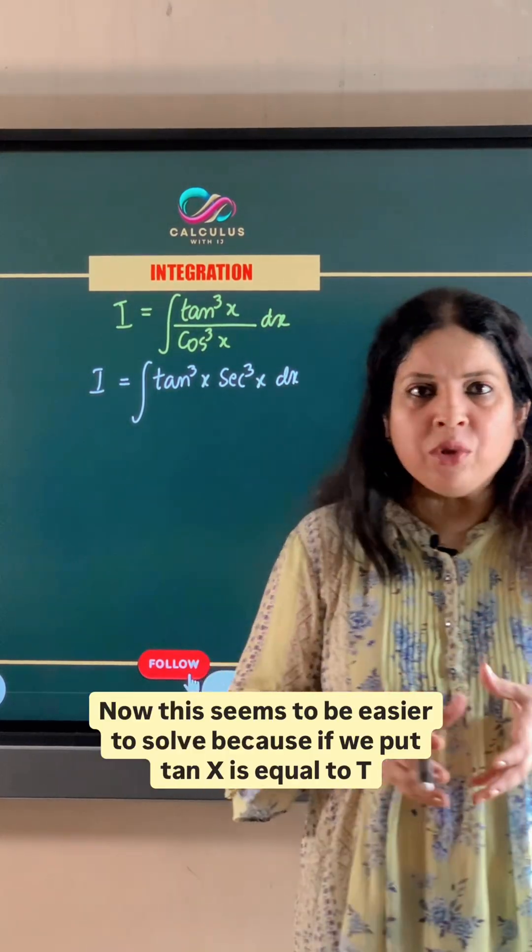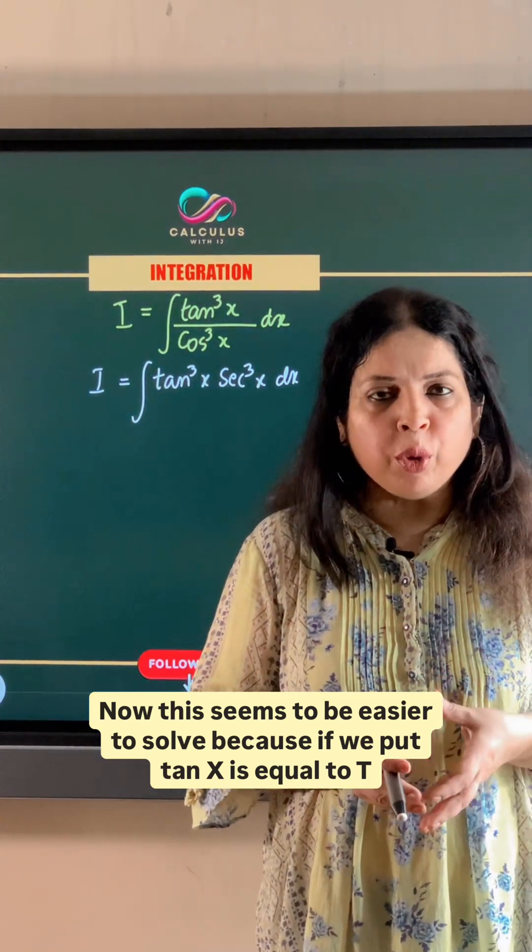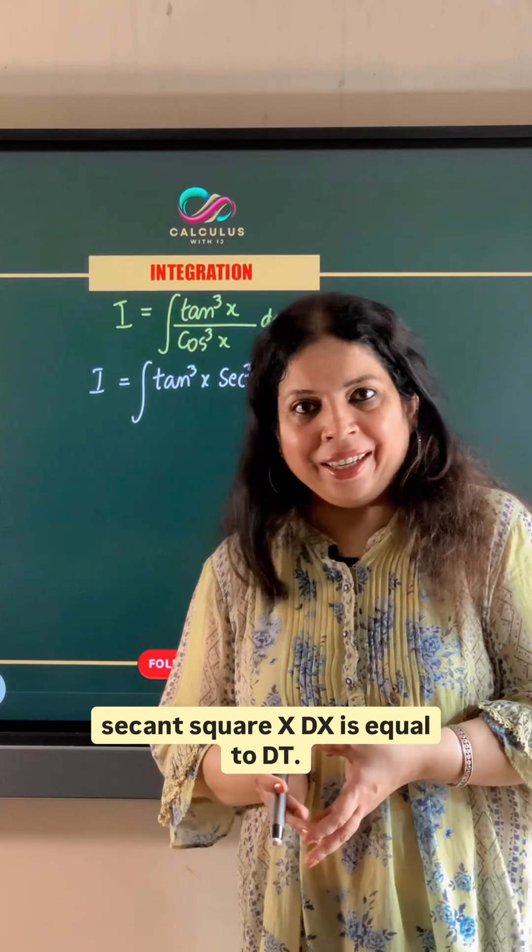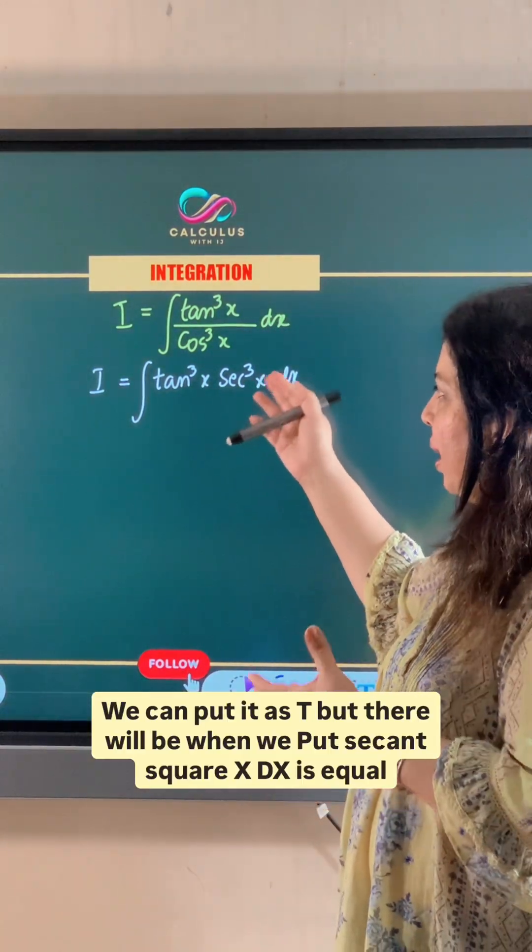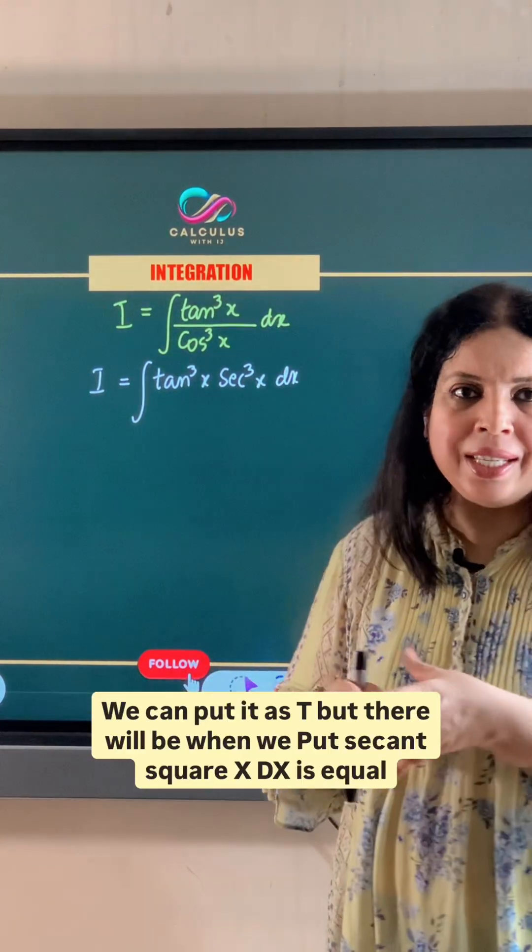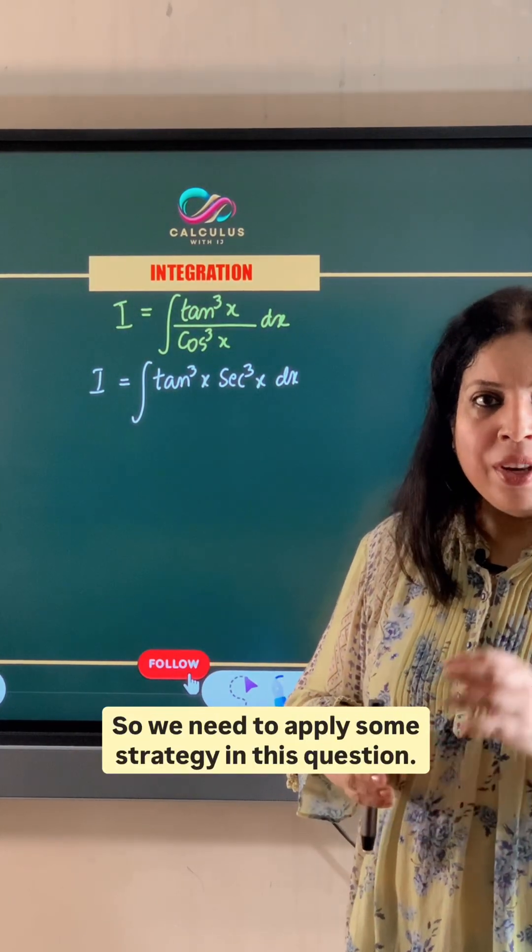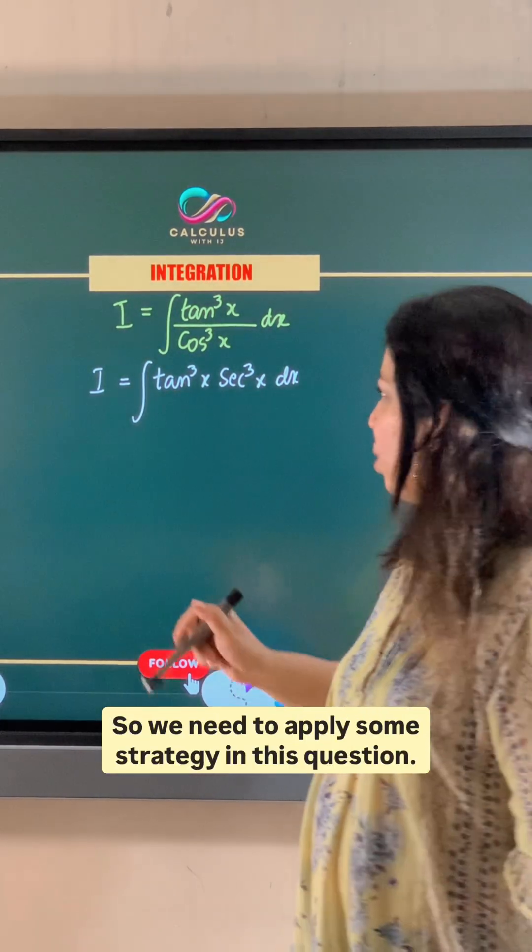Now this seems to be easier to solve because if we put tan x is equal to t, secant square x dx is equal to dt. We can put it as t but there will be when we put secant square x dx is equal to dt, still one secant x will be left. So we need to apply some strategy in this question.